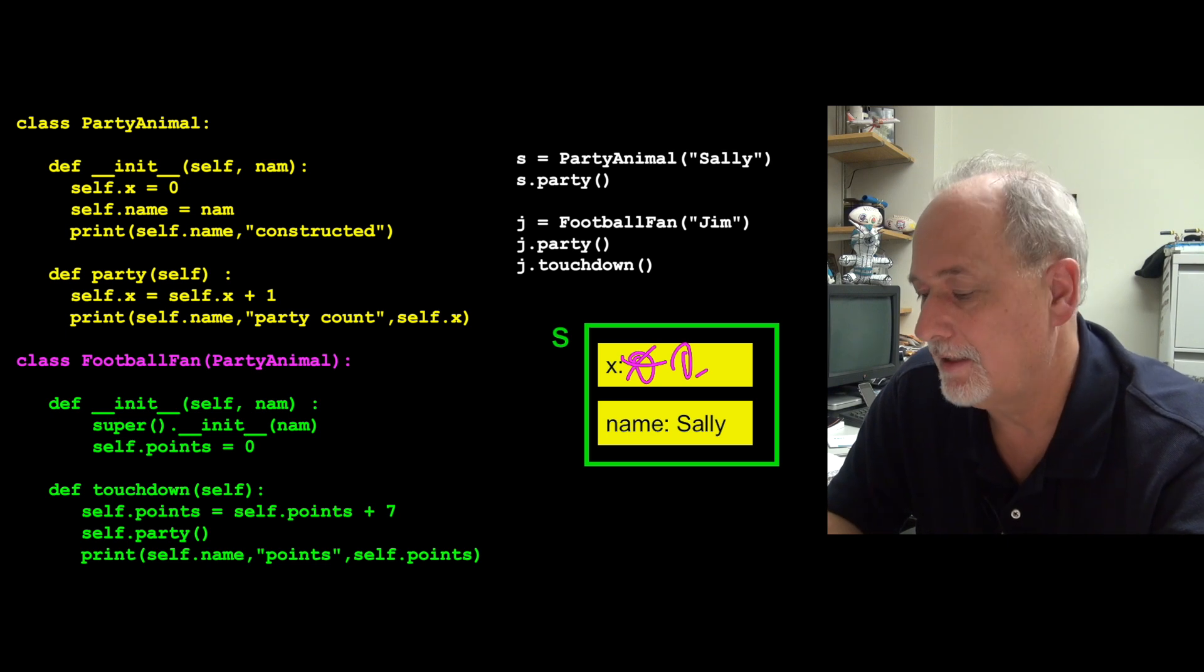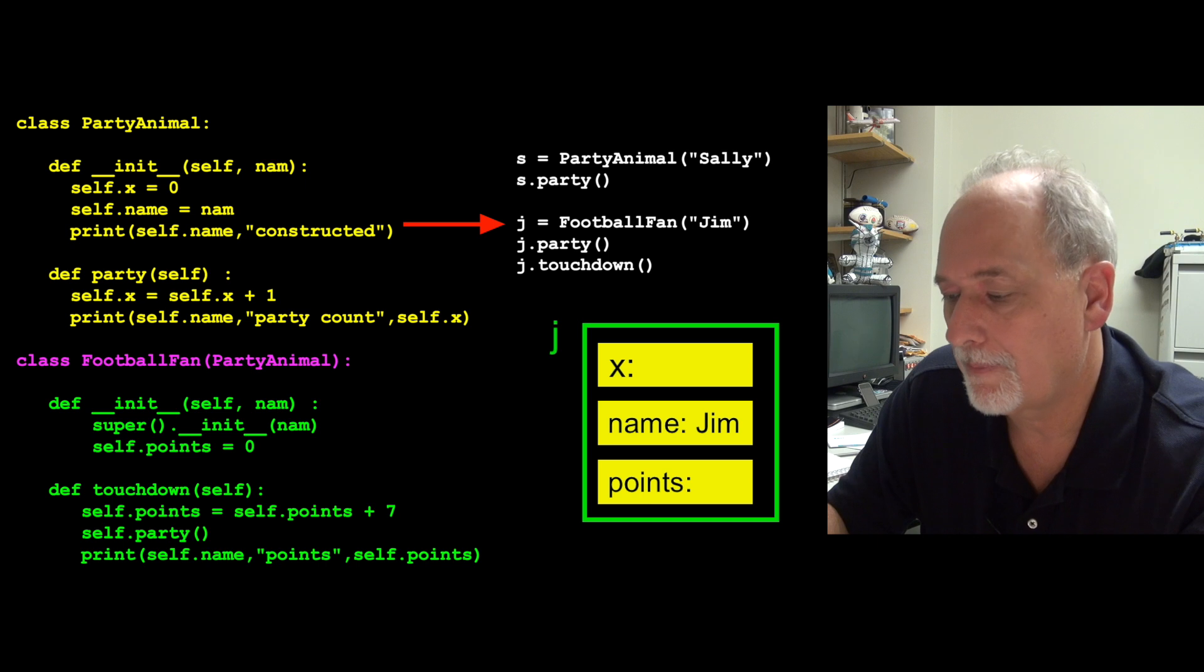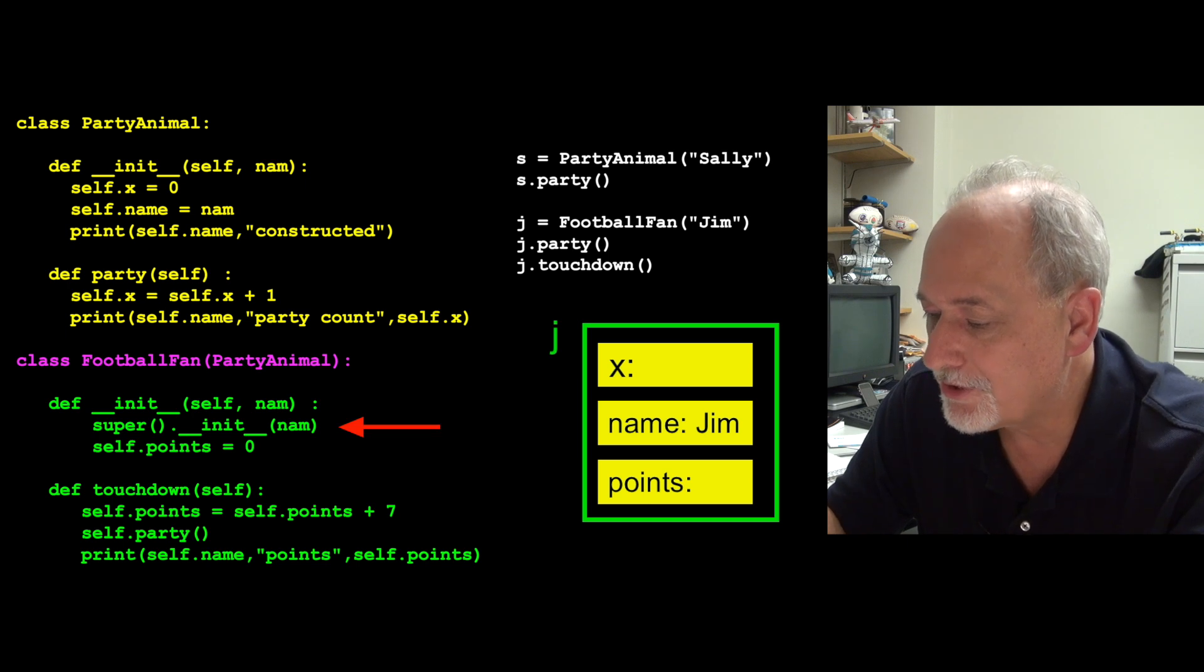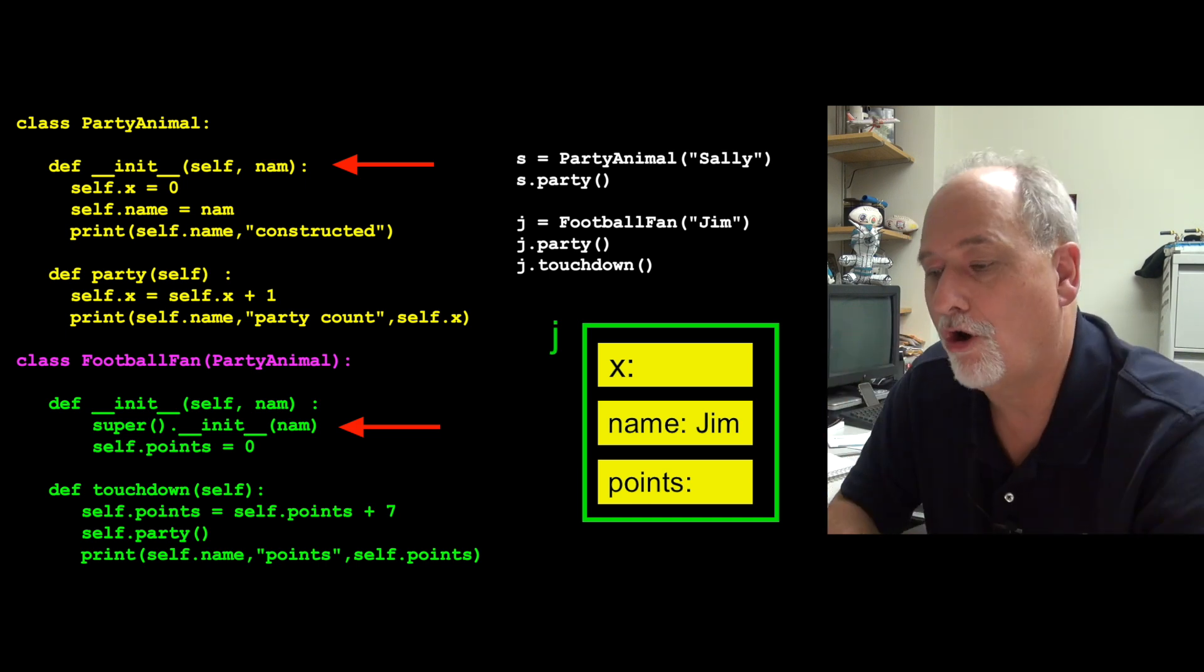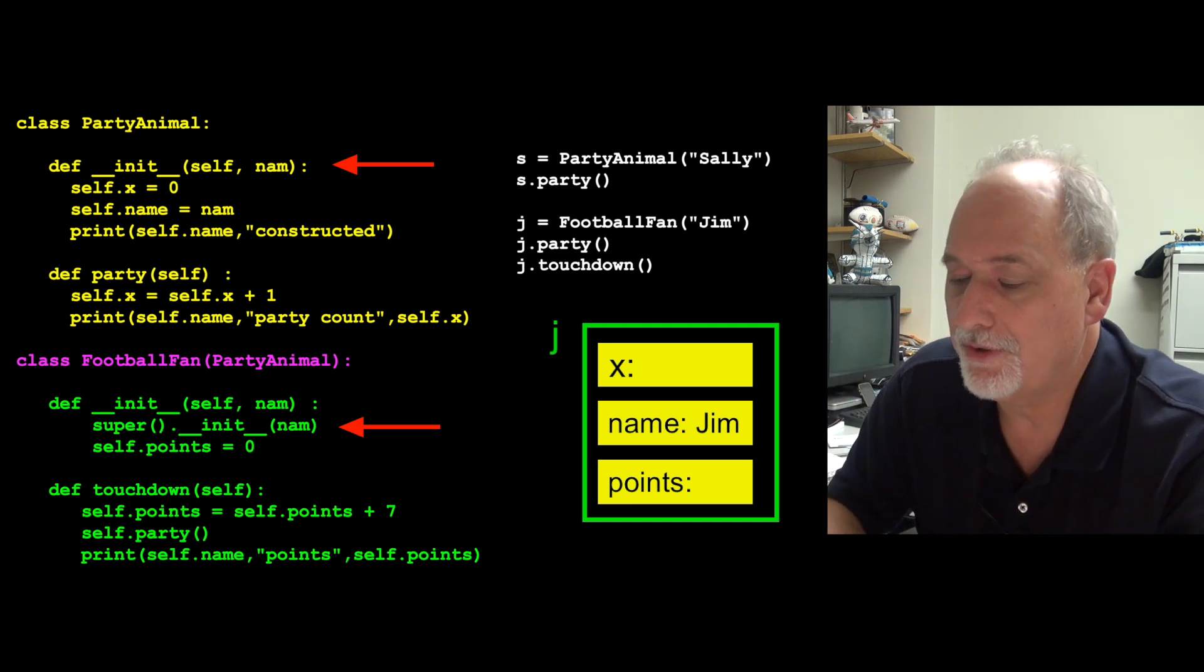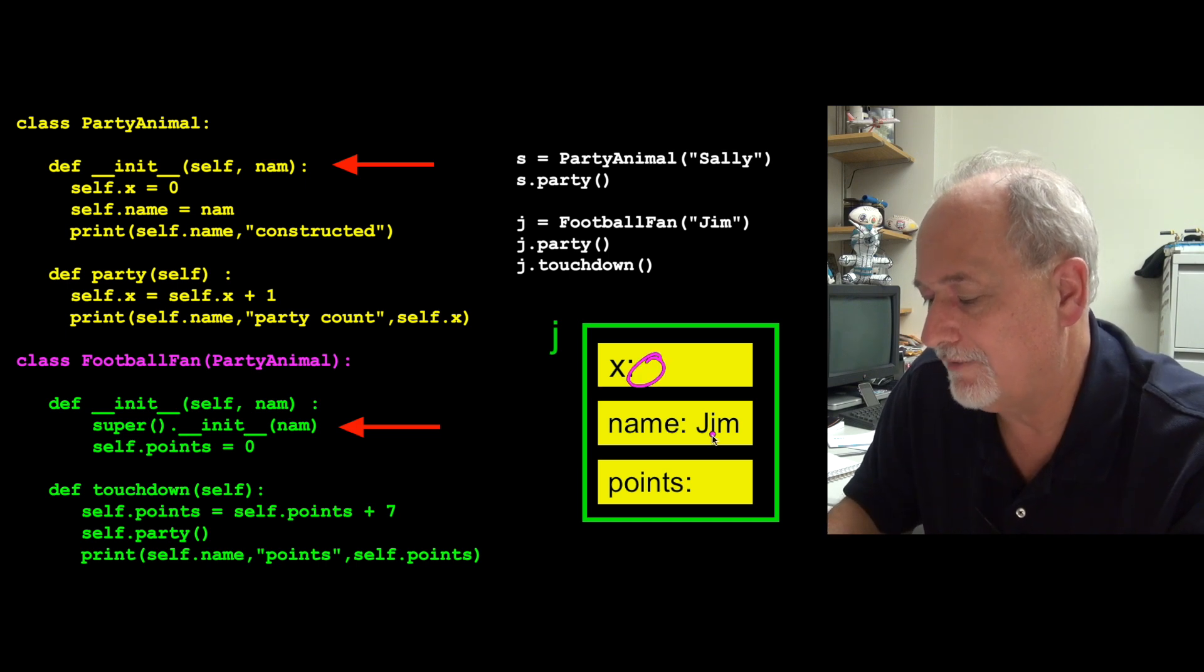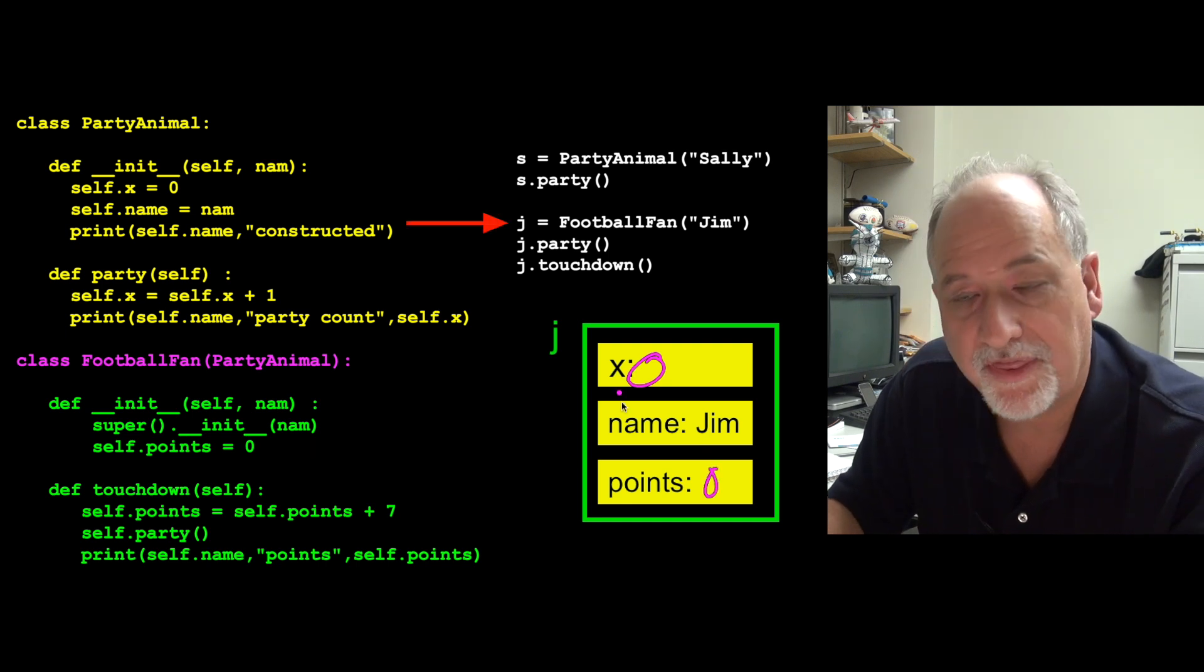But now if we take a look at this code down here, we're going to construct a FootballFan and pass in Jim. So that actually uses the underscore init from PartyAnimal, because we extended PartyAnimal to make FootballFans. So we inherited all of the good that was in there. So there it's going to make a name, a variable x, which is going to start at zero, a variable name that's going to have Jim in it, and a variable points that's going to have a zero in it. So this j variable has more things in it than the s variable has.